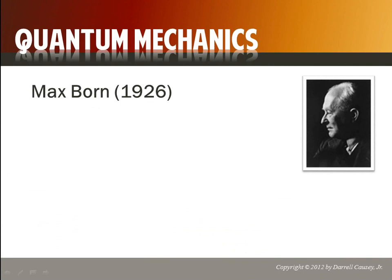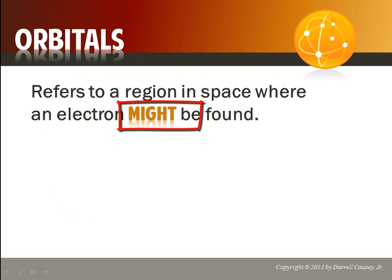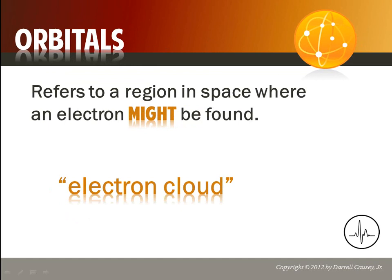Quantum mechanics. Max Born said if the uncertainty principle is true, then why not work with that? Take the Schrödinger equations and realize they're just mathematical possibilities. He suggested that the solutions to Schrödinger's equations be used as possible positions for the electron. These wave equations are pretty complicated, but for chemistry all you need to know is that these solutions give us the possible locations — the orbitals of the electrons. Orbitals are just places where the electron might be found, where it might be in the electron cloud.